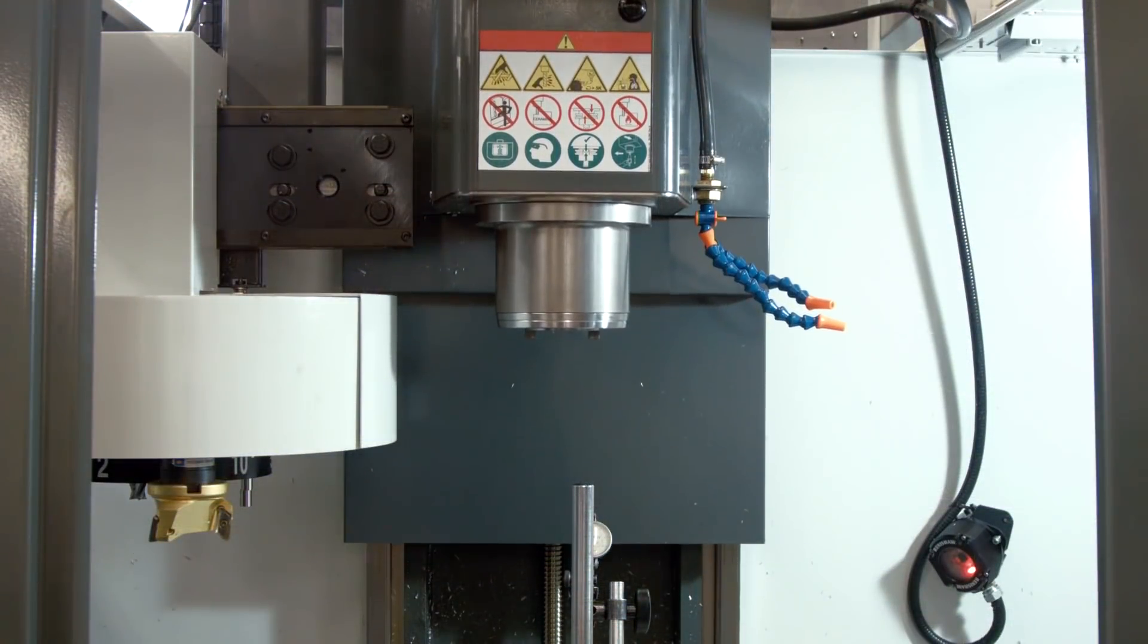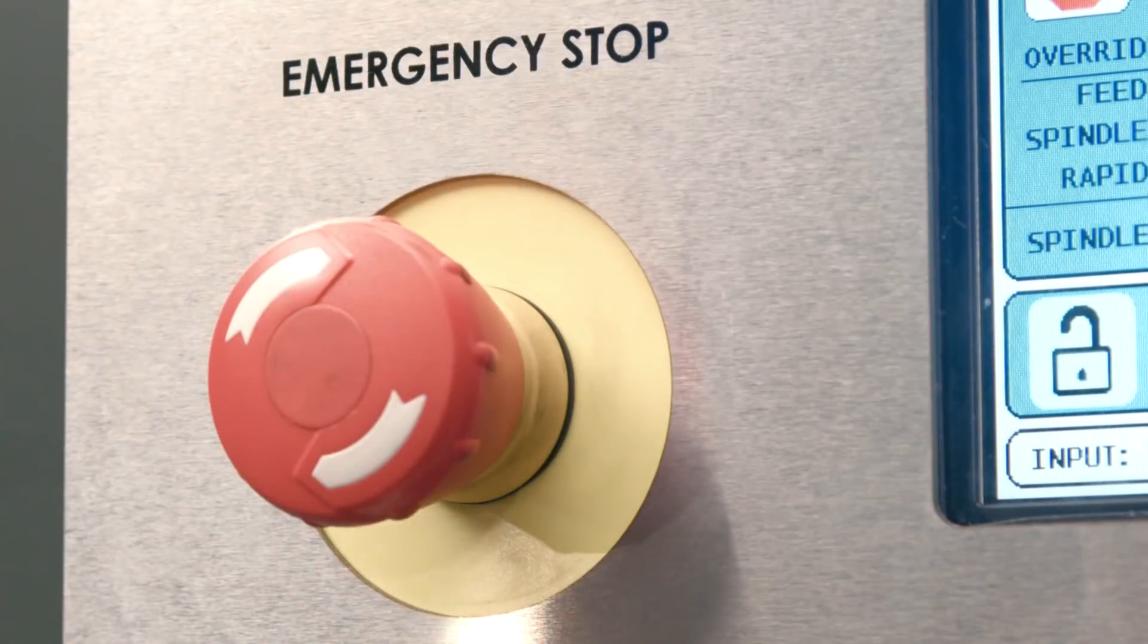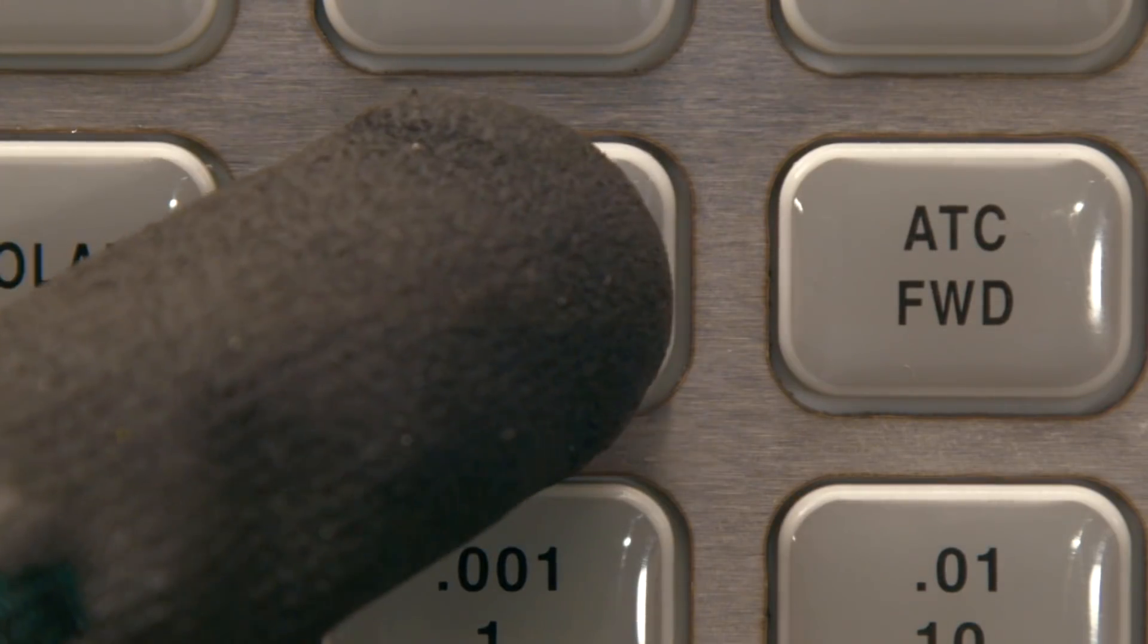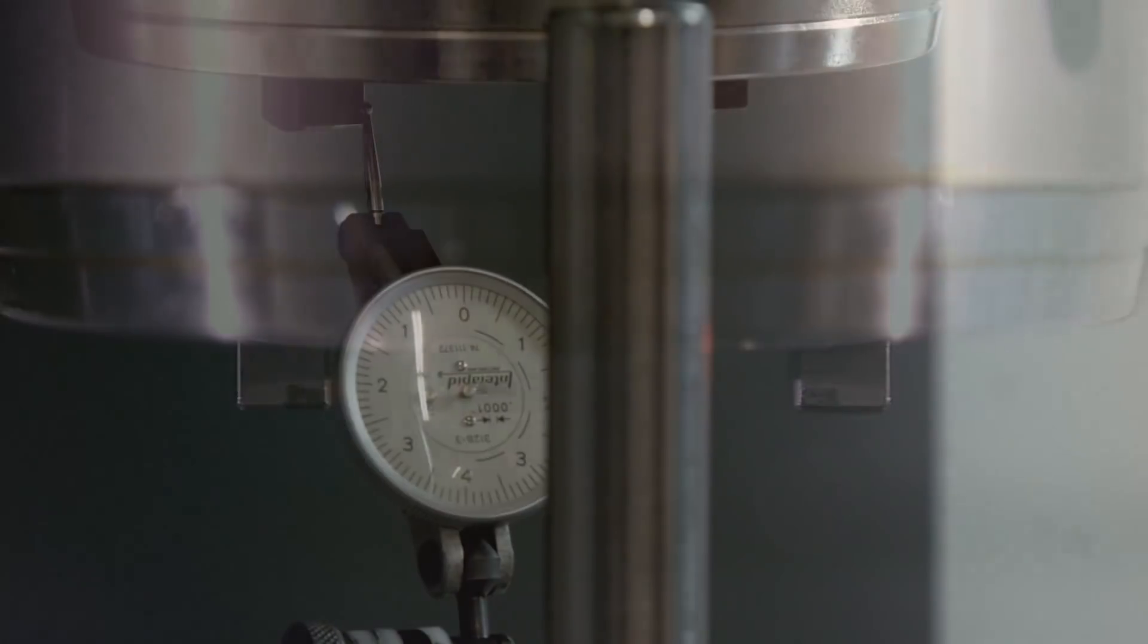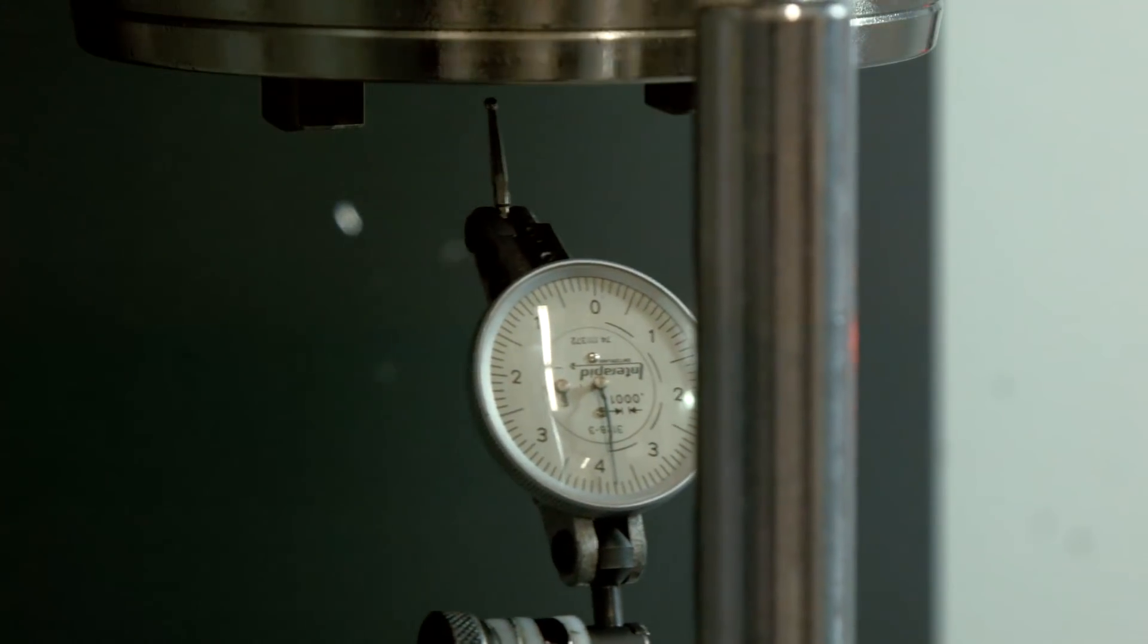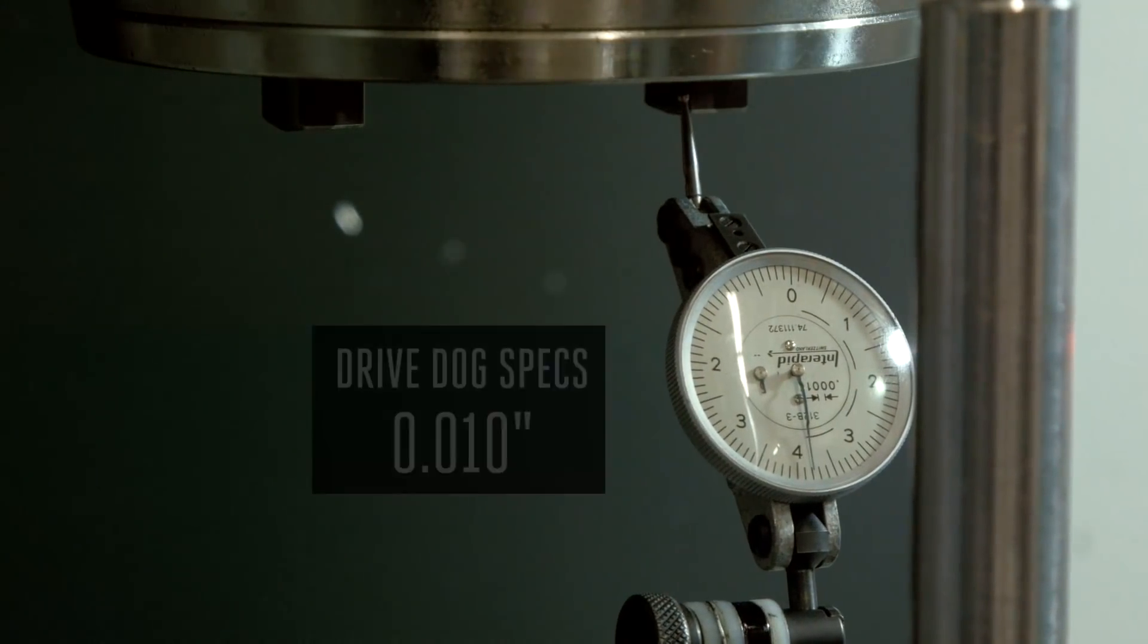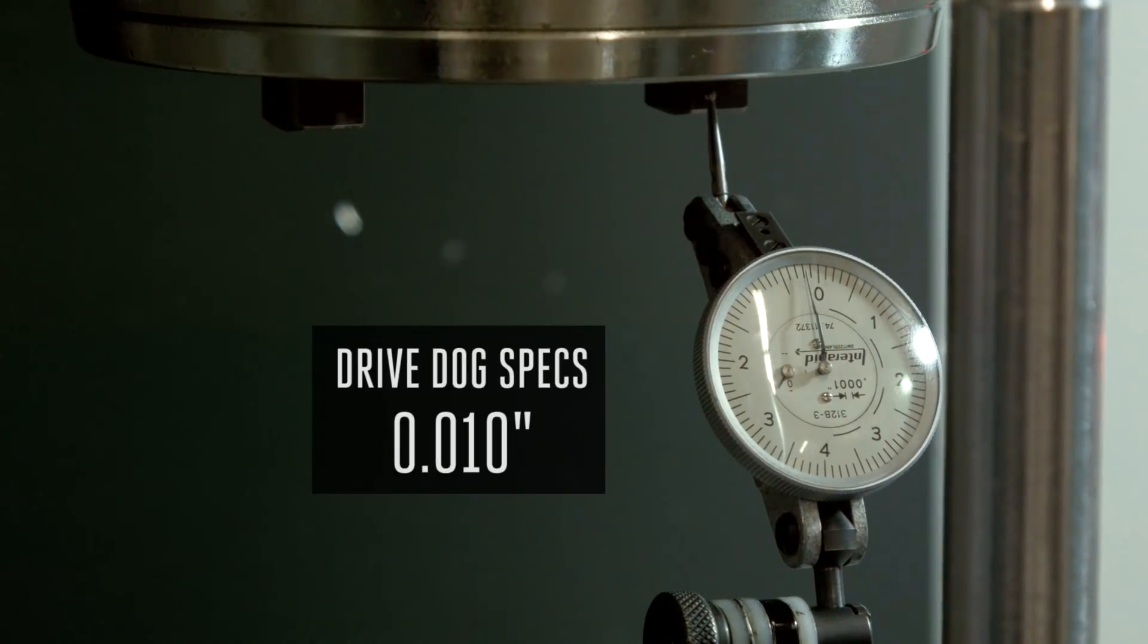Move the indicator out of the way and press e-stop. Enter a much smaller number. Press spindle orient again and then see how close it gets. Repeat this process until the drive dogs are within 10,000 of an inch in the X axis direction.